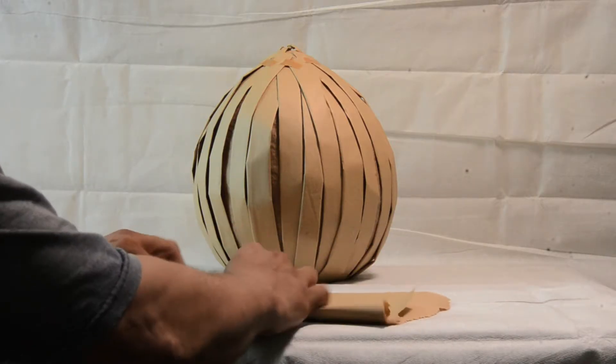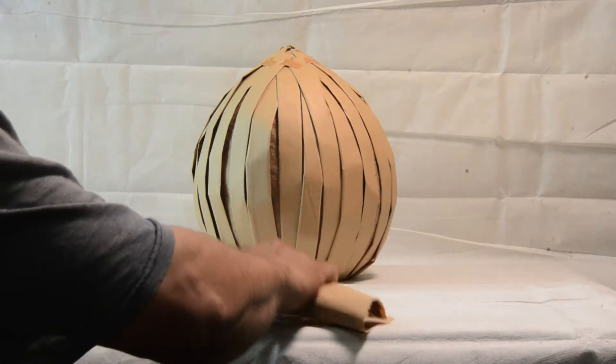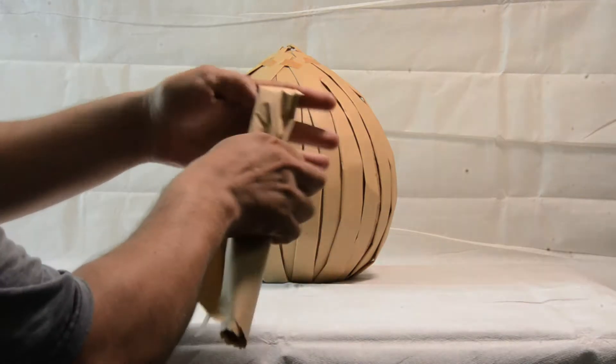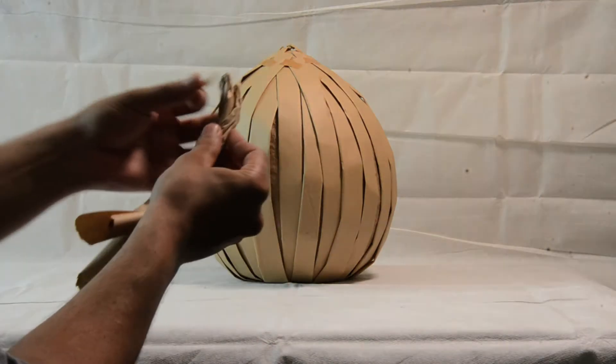Next step I'm going to take a sheet of paper and roll it up to create the stem. Next I'm going to twist it and then tape it.